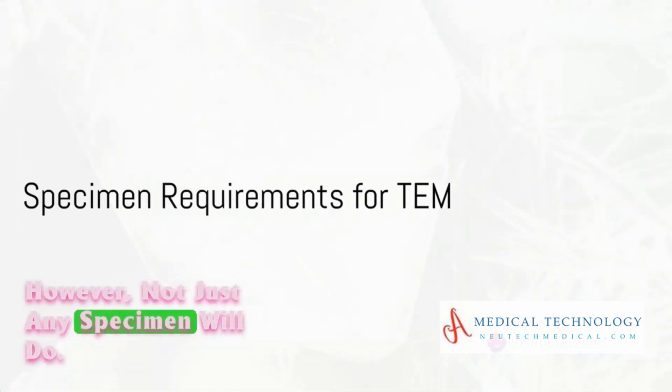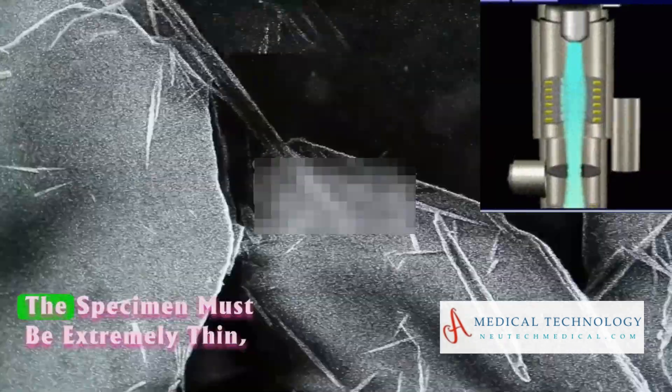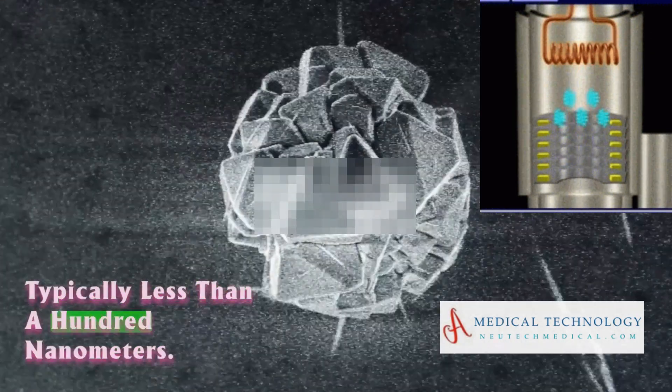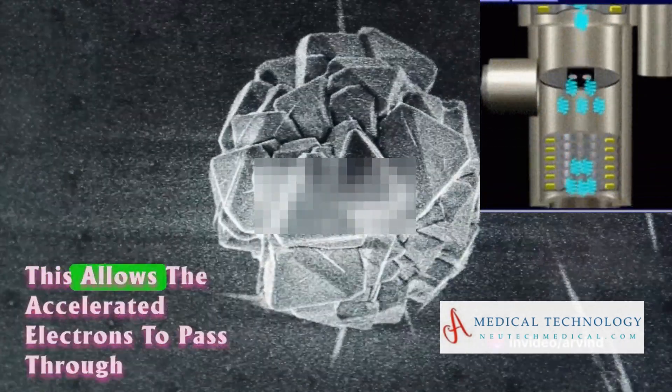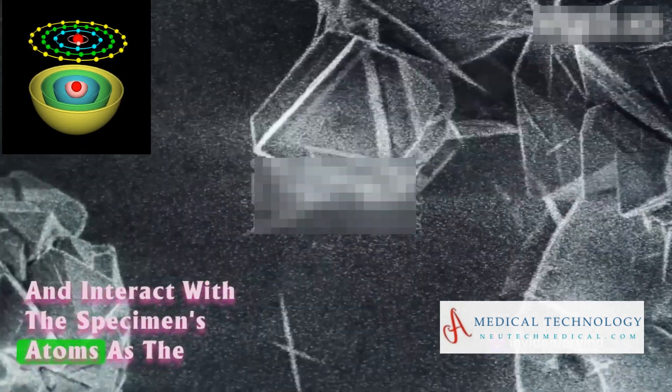However, not just any specimen will do. For a TEM to work effectively, the specimen must be extremely thin, typically less than a hundred nanometers. This allows the accelerated electrons to pass through and interact with the specimen's atoms.